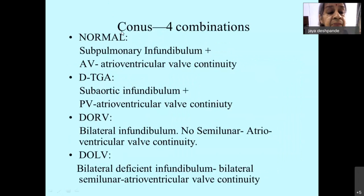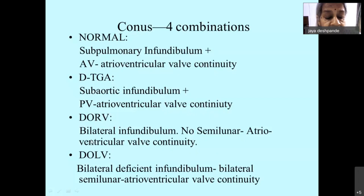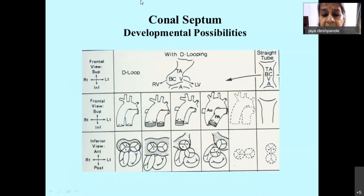As far as the conus is concerned, there will be four combinations. In a normal heart you have sub-pulmonary infundibulum with aortic-to-atrioventricular valve continuity. In transposition of great arteries you have sub-aortic infundibulum with pulmonary-to-atrioventricular valve continuity. In double outlet right ventricle you have bilateral infundibulum with no continuity between the semilunar and the atrioventricular valve. In double outlet left ventricle you have bilateral deficient infundibulum and therefore bilateral semilunar-atrioventricular valve continuity.